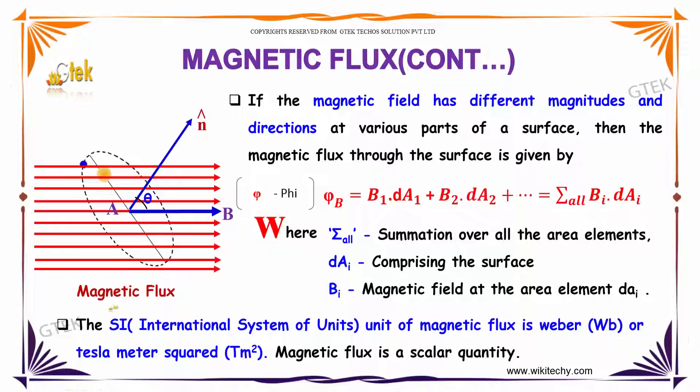The SI (International System of Units) unit of magnetic flux is Weber, or Tesla meter squared. Magnetic flux is considered as a scalar quantity.